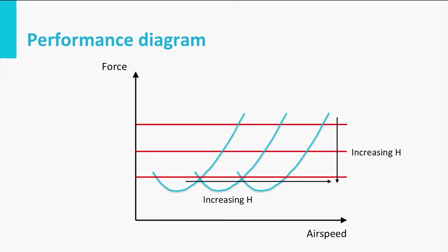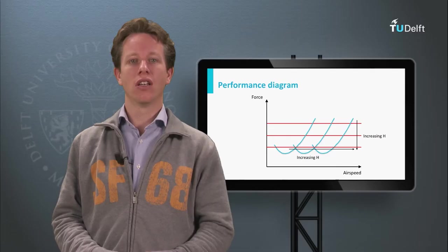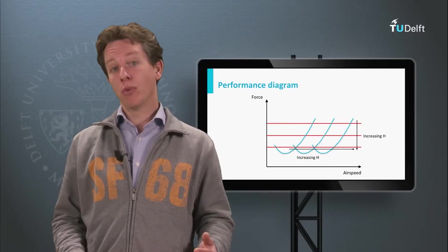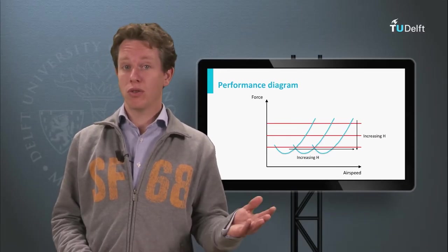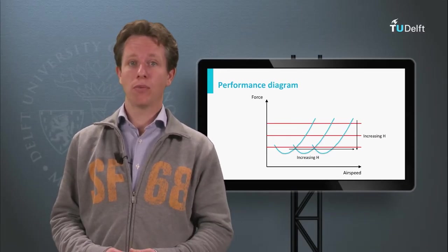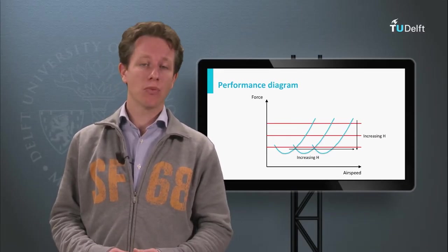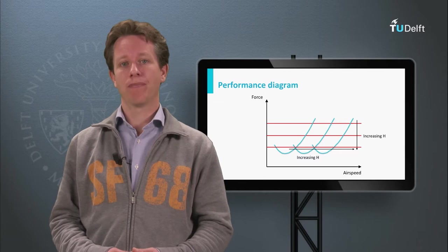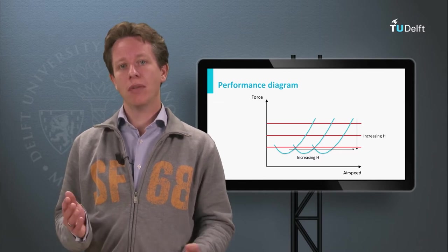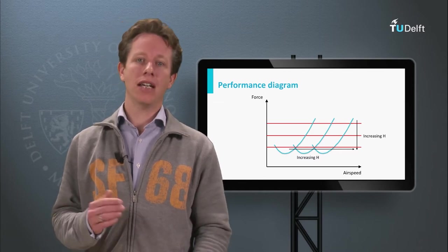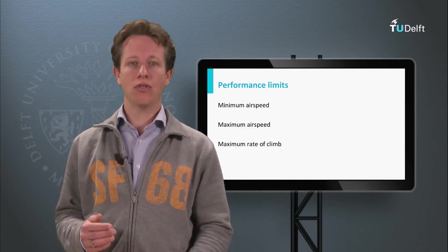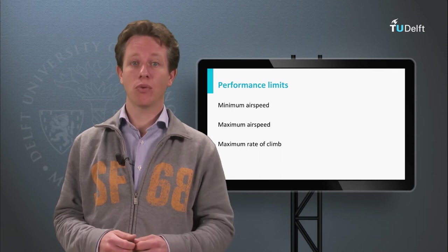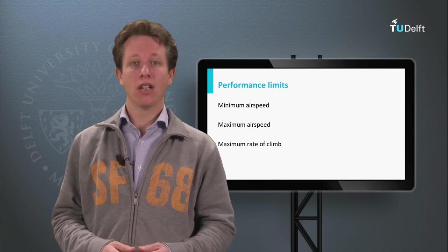So what does this mean for our performance limits — the minimum and the maximum airspeed? Furthermore, what does it do to the achievable maximum rate of climb? You can imagine that at the maximum altitude the maximum rate of climb equals zero.